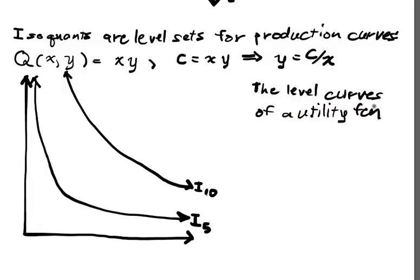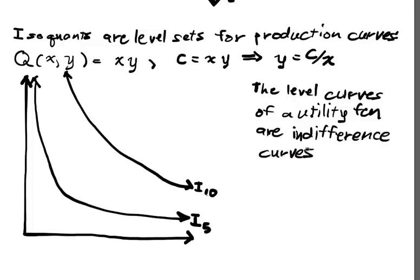The level curves of a utility function are called indifference curves, because the consumer doesn't really differentiate between any two commodity bundles on the same level curve. You can draw these same kinds of curves just as you would with isoquants, but we call them indifference curves instead of isoquants to distinguish between production versus utility.